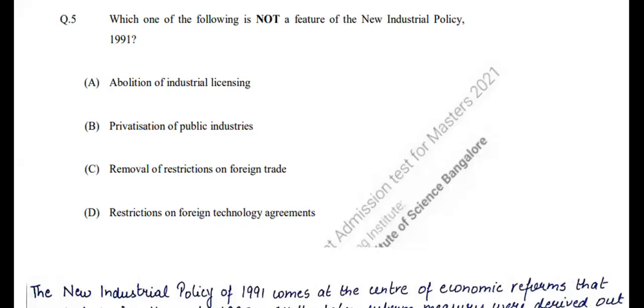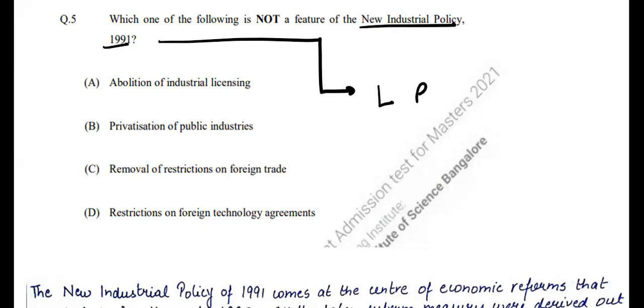This is question number five of the IIT JAM Economics 2021 exam. The question asks: which one of the following is not a feature of the New Industrial Policy? The New Industrial Policy that came in 1991 is essentially LPG — Liberalization, Privatization, and Globalization.